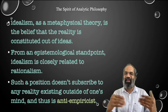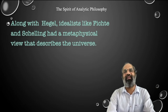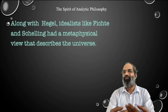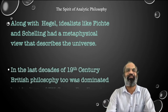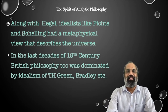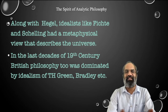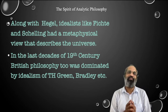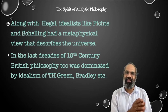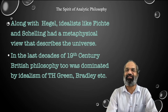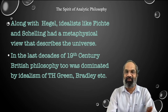Along with Hegel, German idealists like Fichte and Schelling also constructed metaphysical systems from pure reason. In the last decades of the 19th century, British philosophy too was dominated by idealism — T.H. Green and F.H. Bradley developed their own idealistic systems in Britain, taking influence from German philosophy. These British philosophers also subscribed to the idealistic tradition. This forms the background of analytic philosophy.